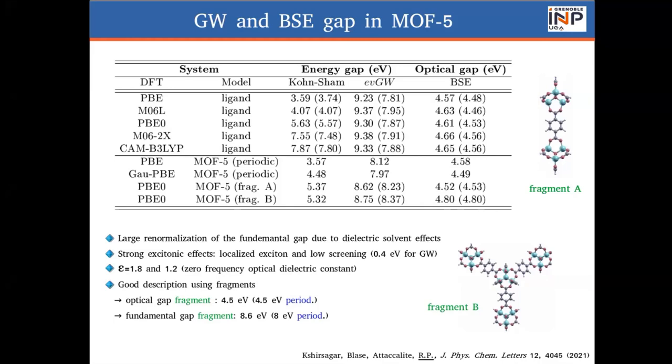And so, this explains why we have such a strongly bound exciton, because the excitations are localized into specific ligands, and then the screening is relatively small.